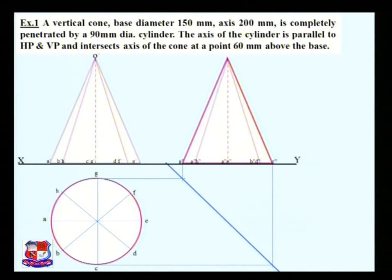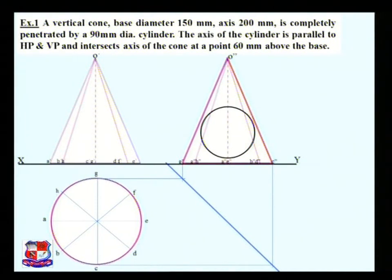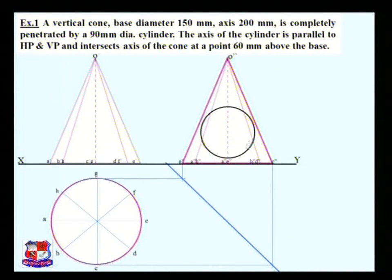Name the apex point o' and o double-dash (or o1). Now draw a circle in the side view such that the axis of the cylinder — the center of this circle — is at a distance of 60 mm above the XY line. Mark the center here and draw a circle having diameter 90 mm, that is, a radius of 45 mm.